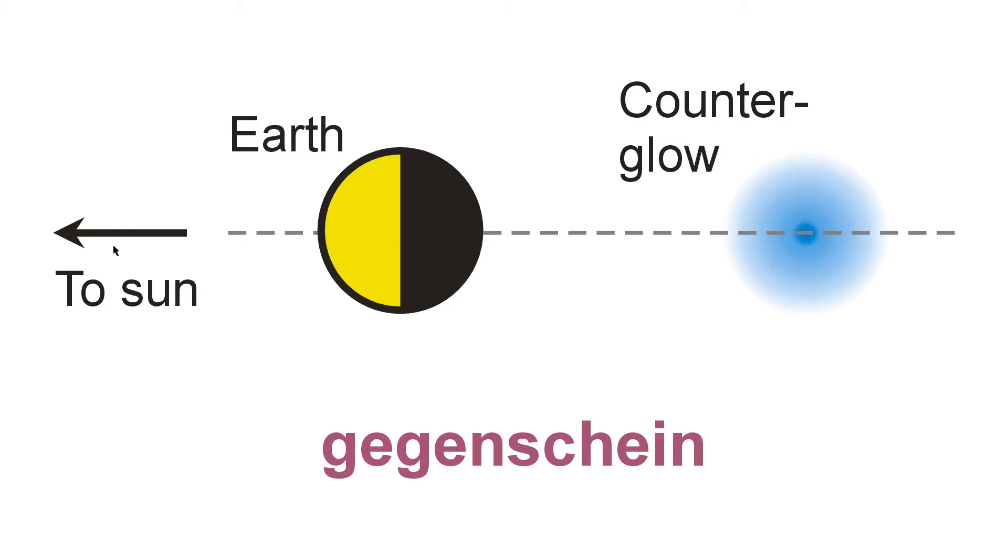Especially, well really just about only, on a moonless night far away from the lights of civilization. When your eyes get a chance to adapt to the darkness, you may be able to perceive a faint glow exactly opposite the sun.